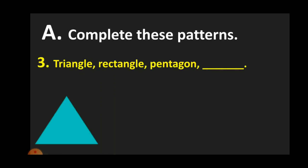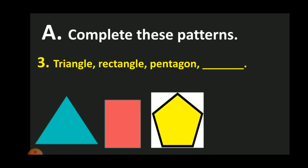If you see the figures, a triangle has three sides and three angles. Similarly, a rectangle has four sides and four angles. A pentagon has five sides and five angles.